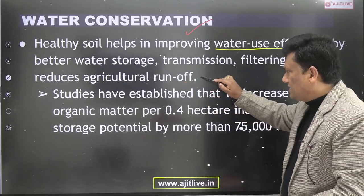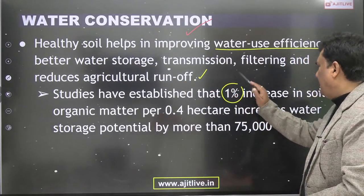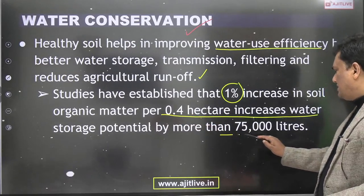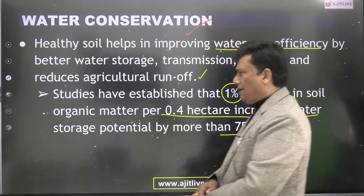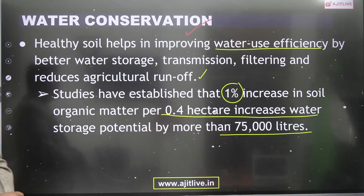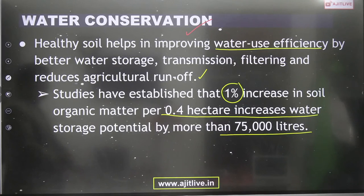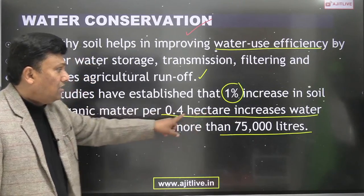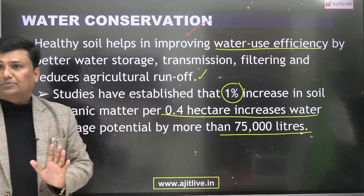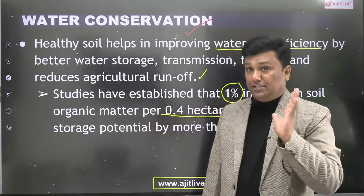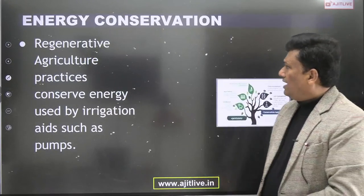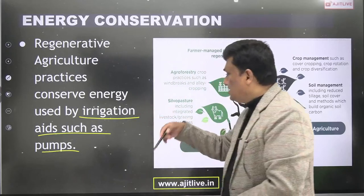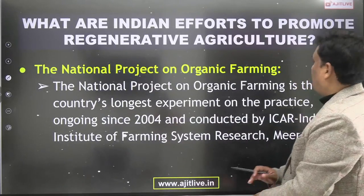Water conservation is an important aspect. Healthy soil improves water use efficiency through better water storage, better transmission, filtering, and reduces agricultural runoff. A 1% increase in soil organic matter per 0.4 hectare of land increases water storage potential by 75,000 liters — that is the power of regenerative agriculture.